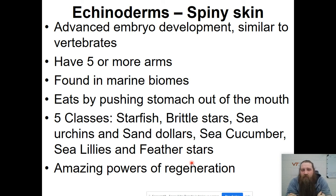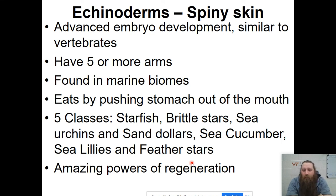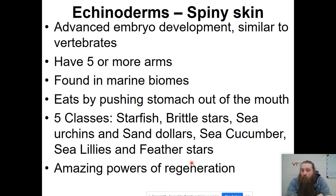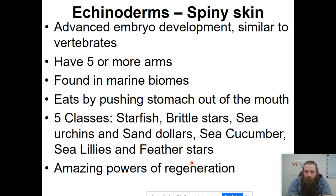The next one is the echinoderms, which means spiny skins. These are pretty advanced as far as their embryo development is concerned — very similar to vertebrates. They have five or more arms and we find them in marine biomes; these are saltwater, ocean-dwelling organisms. They eat by pushing their stomach out of their mouth and digesting things that way. There are five classes: starfish, brittle stars, sea urchins and sand dollars, sea cucumbers, and sea lilies or feather stars. They have really cool powers of regeneration — brittle starfish will get sucked into a pump, get shredded, and just regrow.